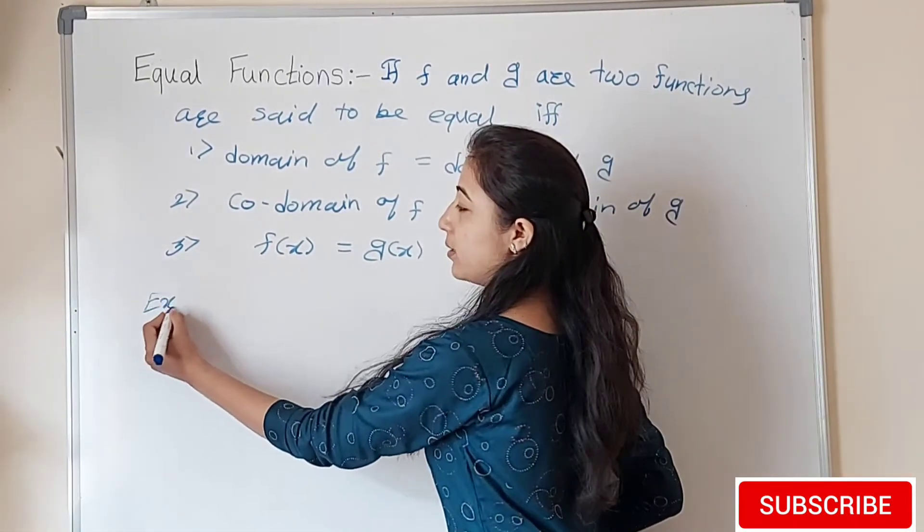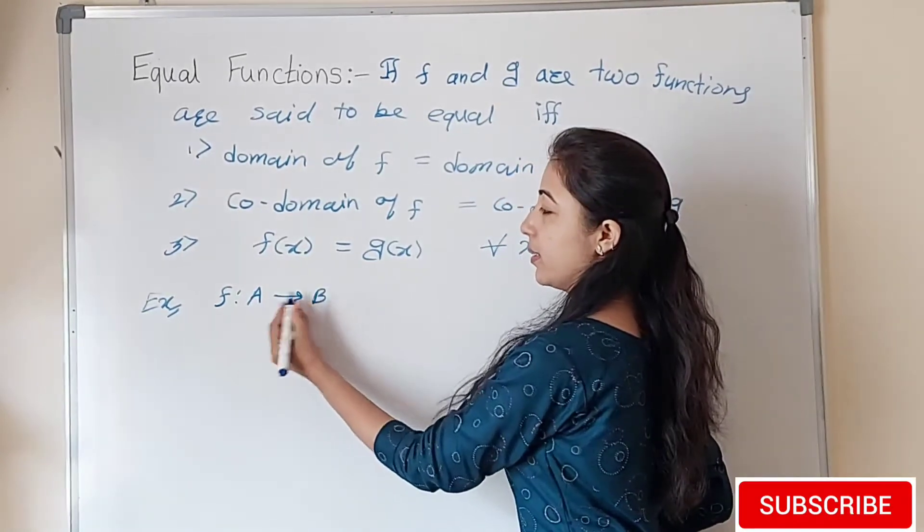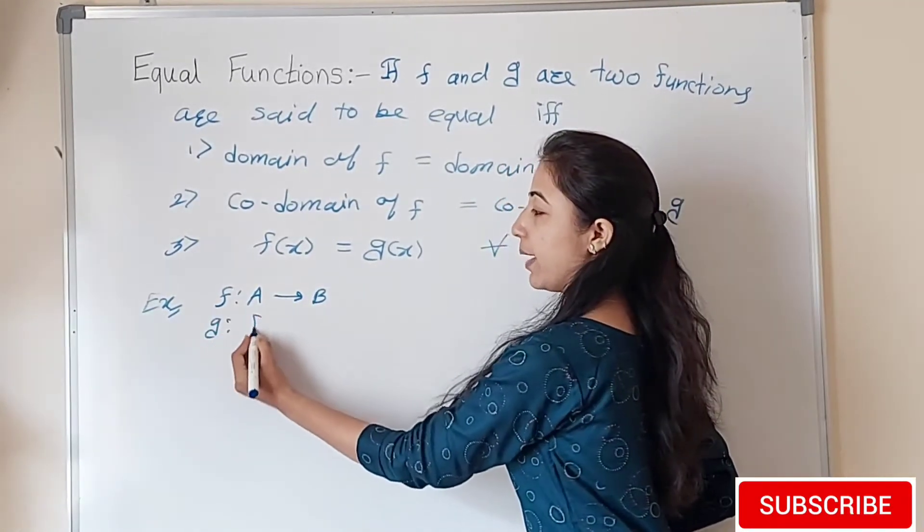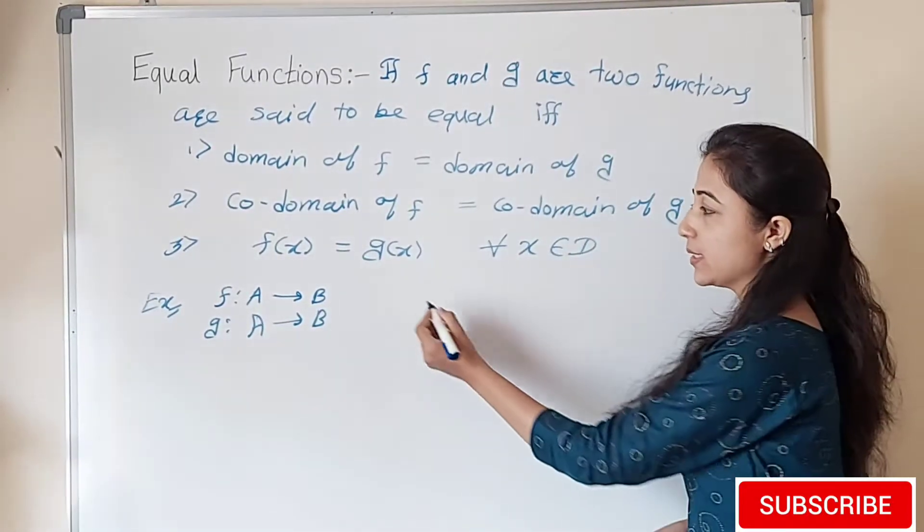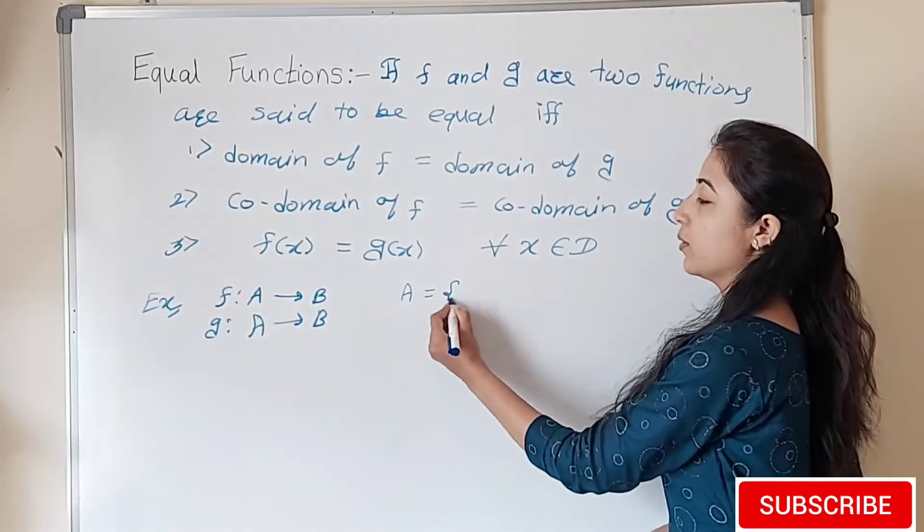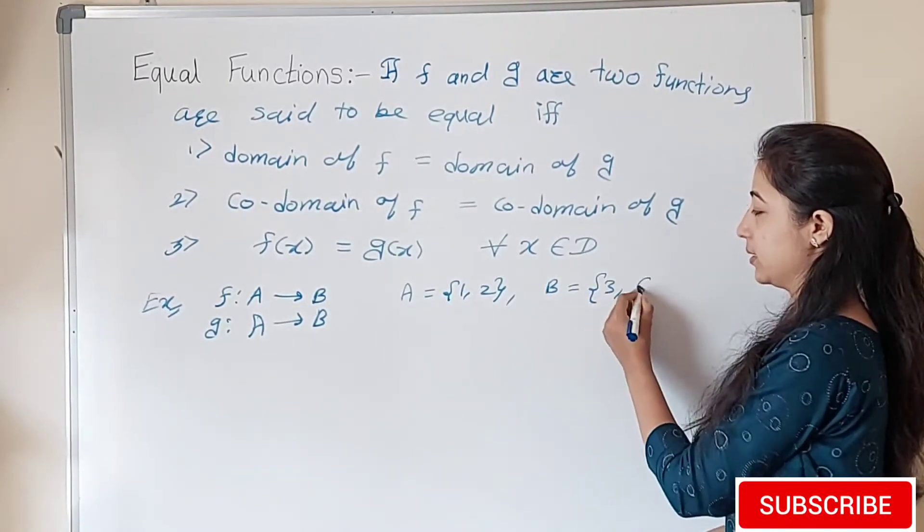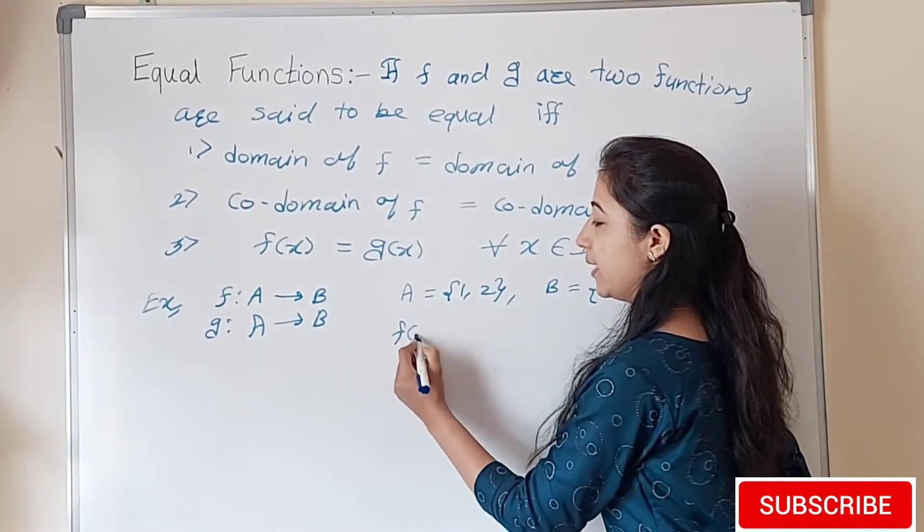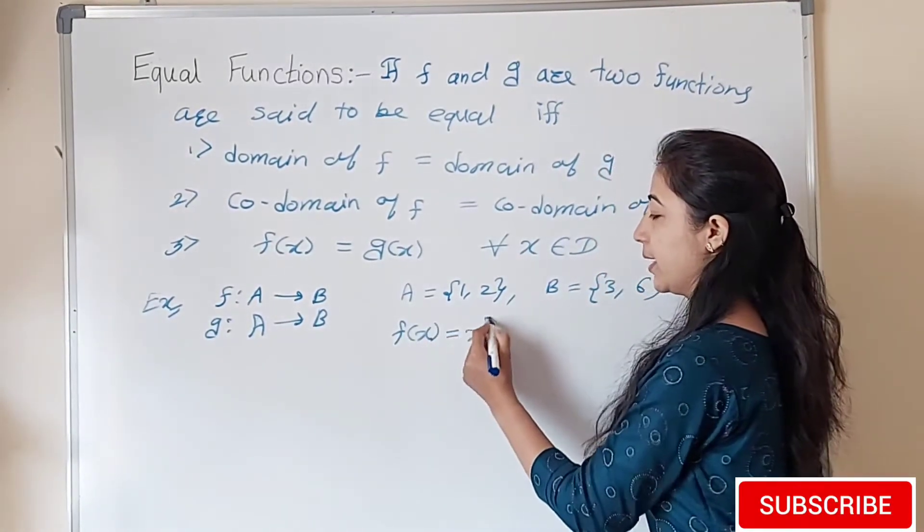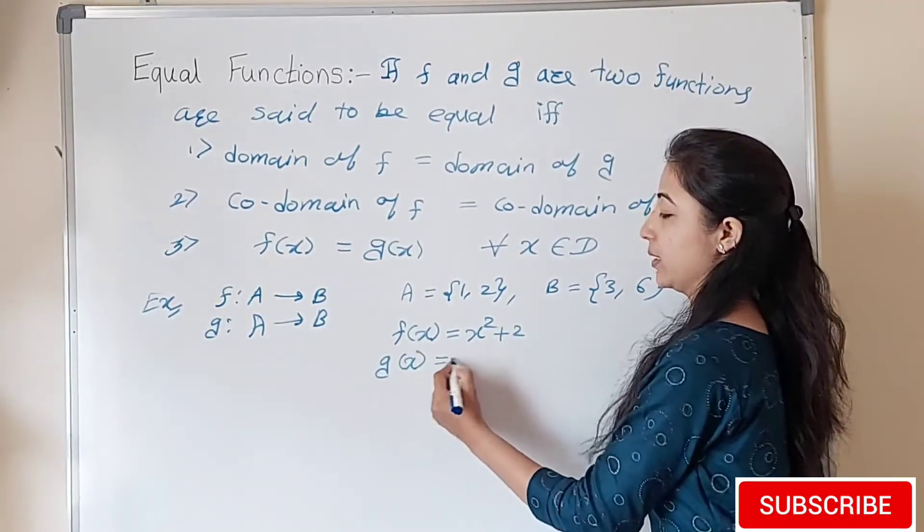Suppose we have given the function f mapping from set A to B, and function g also mapping from set A to B. Let us consider set A contains elements 1, 2 and set B contains elements 3, 6. We are defining f such that f(x) equals x squared plus 2, and g(x) equals 3x.